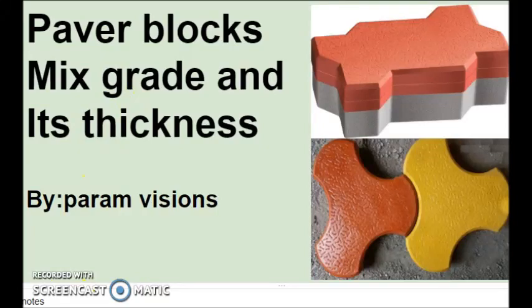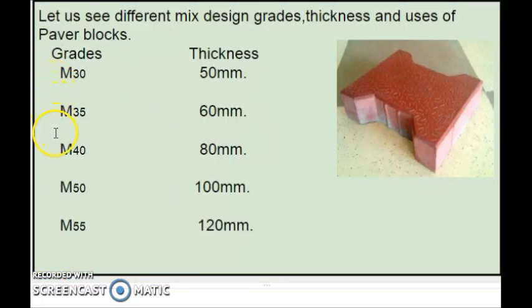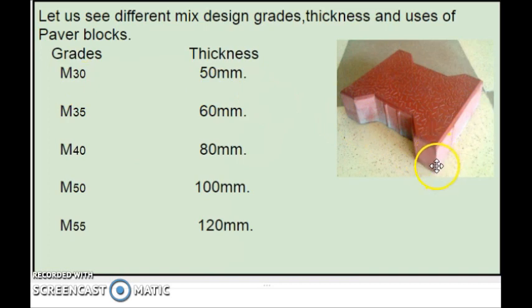Now, let us see different mix grades of paper blocks and their thickness. These are the different mix grades of paper blocks, from M32 up to M55. For M30, the thickness will be 50 mm.